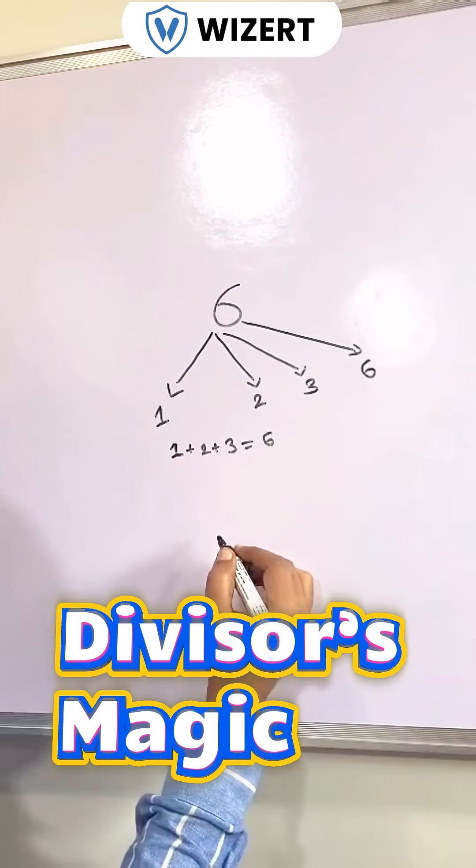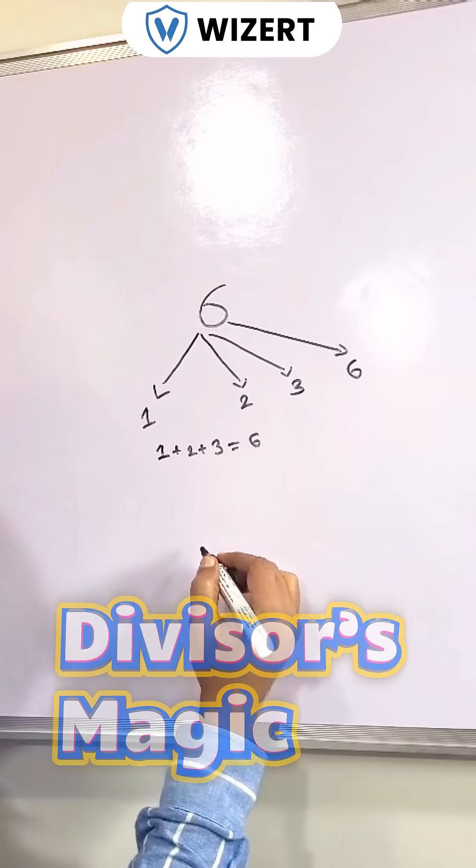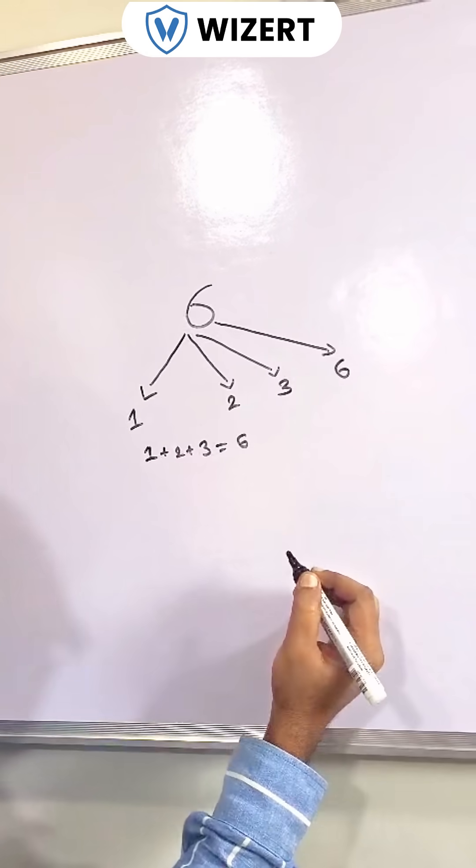So in this way we identify a number, that's whether the number is perfect or not. Now let us take another example like ten.